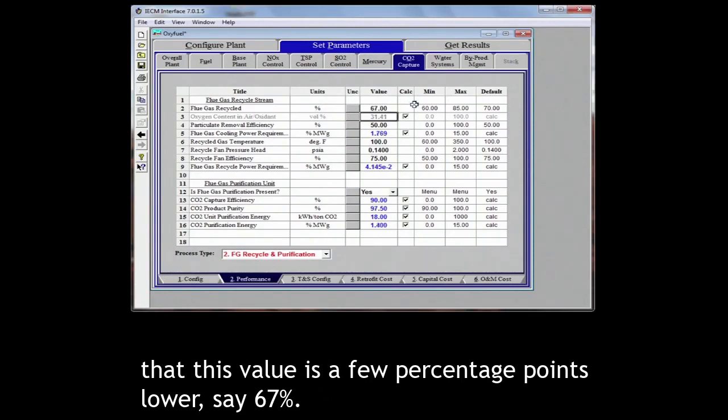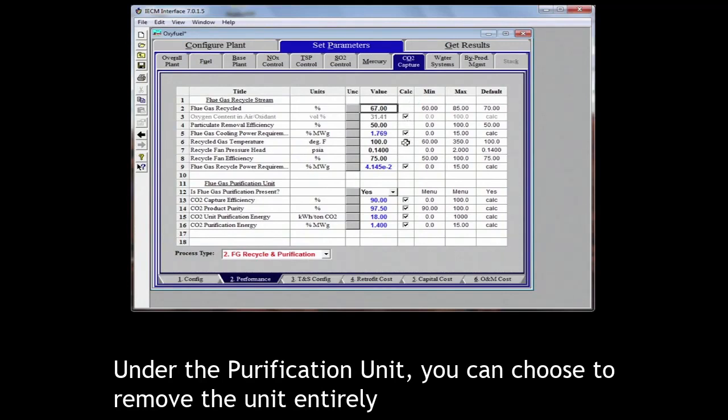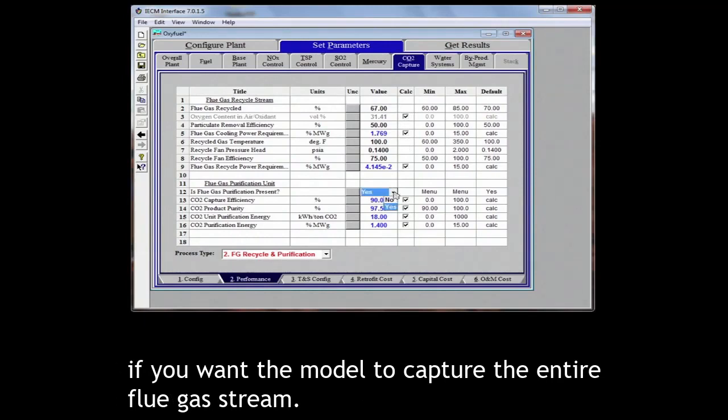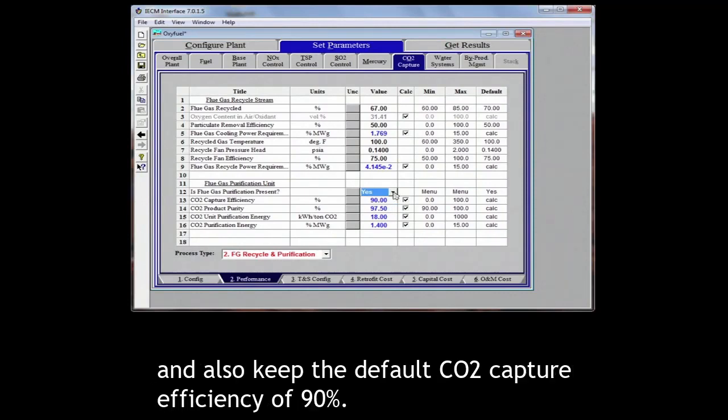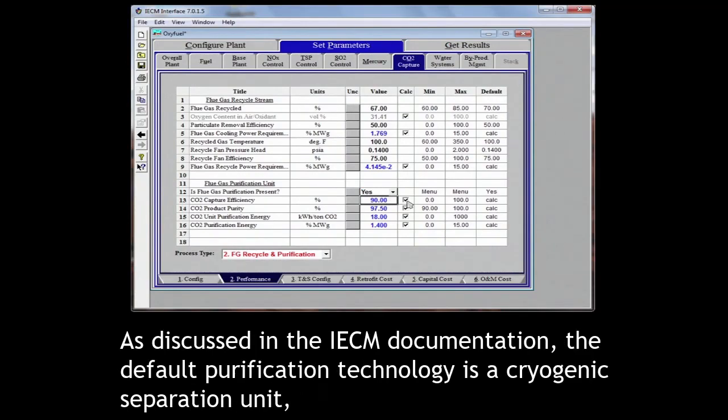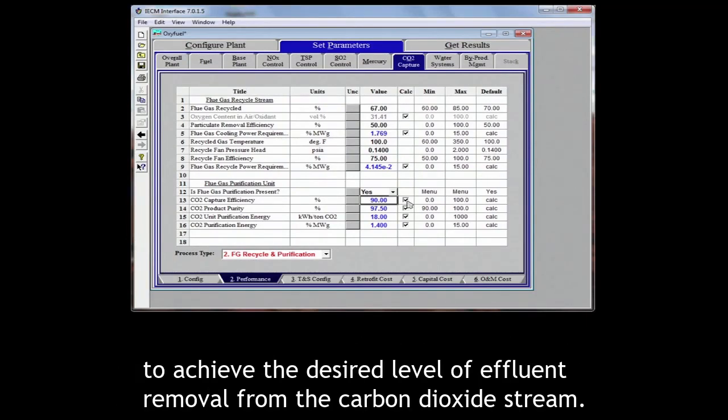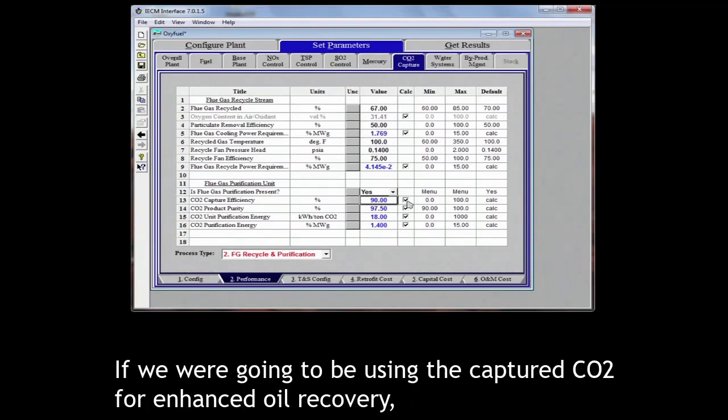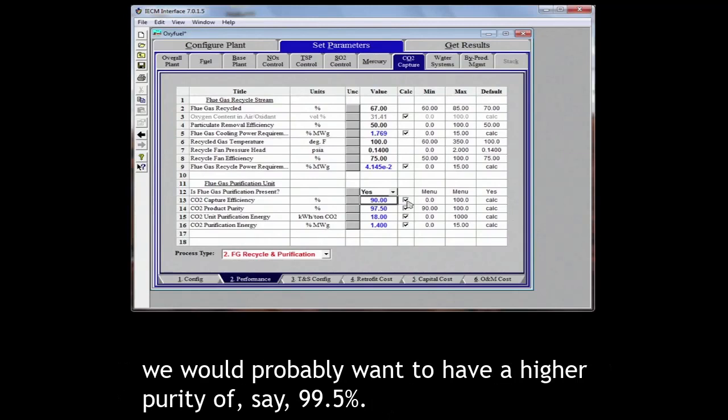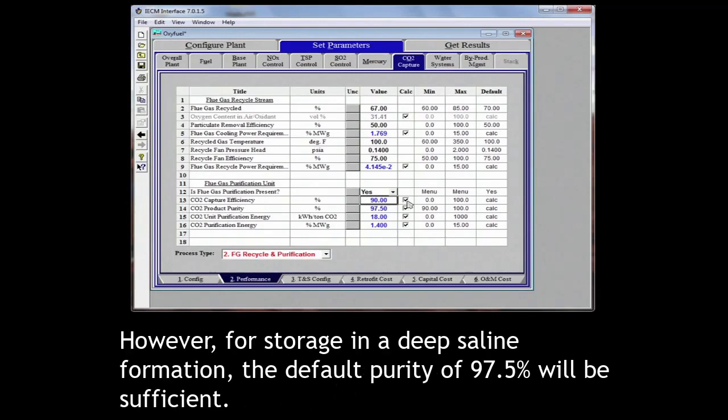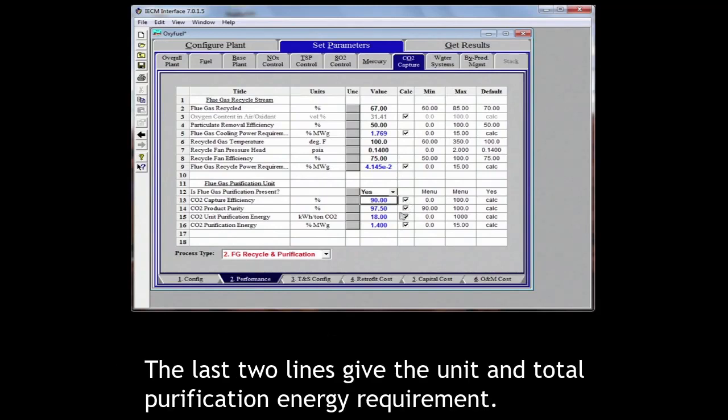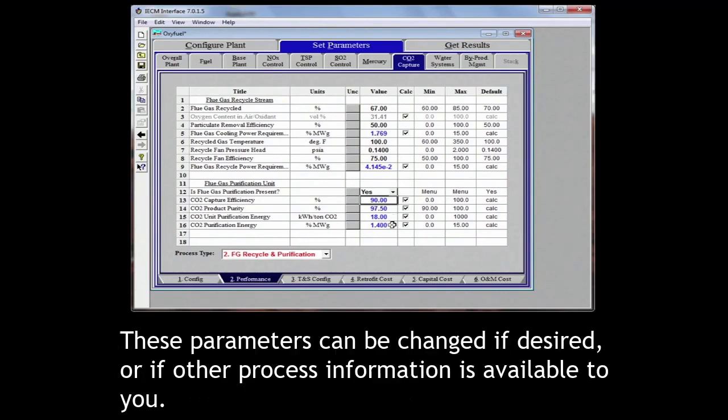Under the purification unit, you can choose to remove the unit entirely if you want the model to capture the entire flue gas stream. For this example, however, we will keep the purification unit and also keep the default CO2 capture efficiency of 90%. As discussed in the IACM documentation, the default purification technology is a cryogenic separation unit which uses a combination of knockout drums and/or distillation columns to achieve the desired level of effluent removal from the carbon dioxide stream. If we are going to be using the captured CO2 for enhanced oil recovery, we would probably want a higher purity of say 99.5%. However, for storage in a deep saline formation, the default purity of 97.5% will be sufficient. The last two lines give the unit and total purification energy requirement. These parameters can be changed if desired or if other process information is available to you.